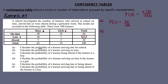For B: calculate the probability of a learner arriving on time. They are not specific again — it includes boys and girls arriving on time, which totals 65. So the probability of on time equals 65 over 100.